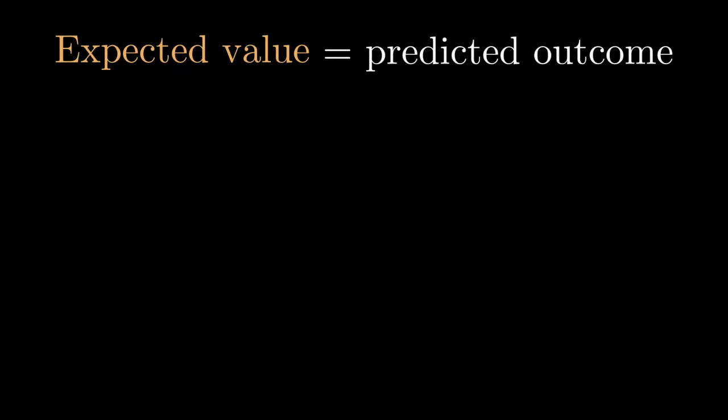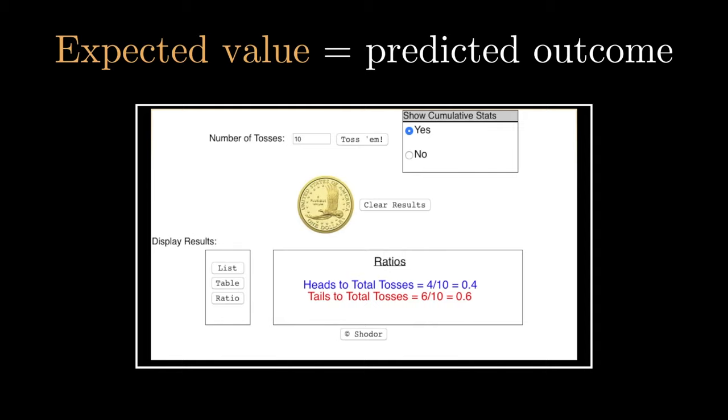Before I talk about the actual answer to this question, let's go over what an expected value is. Given some probabilistic event like flipping a coin, the expected value is just what we predict the outcome to be. In the sense of flipping a coin, we expect heads to show up half the times and tails to be the other half. So if I flip a coin 10 times, you would expect 5 heads and 5 tails. This doesn't mean that it's always going to be 5 heads and 5 tails, it's just the average of every single outcome.